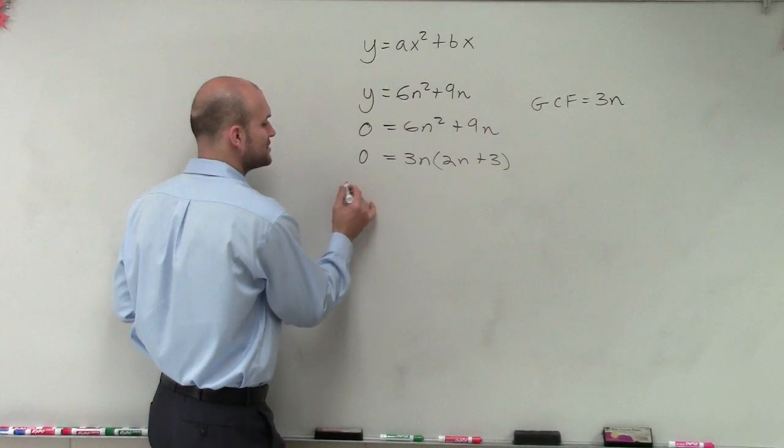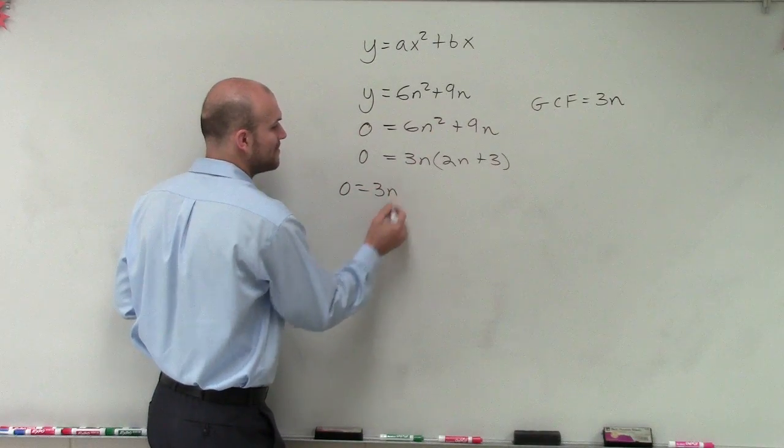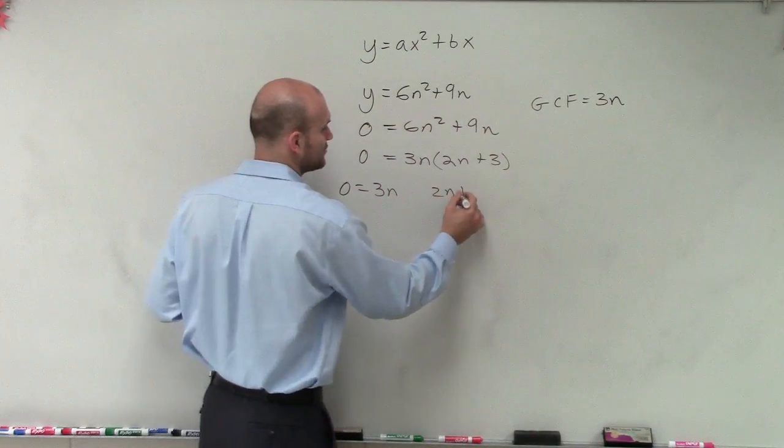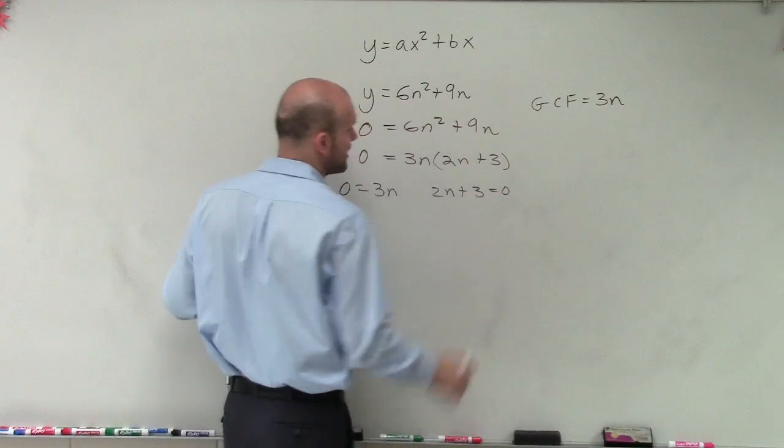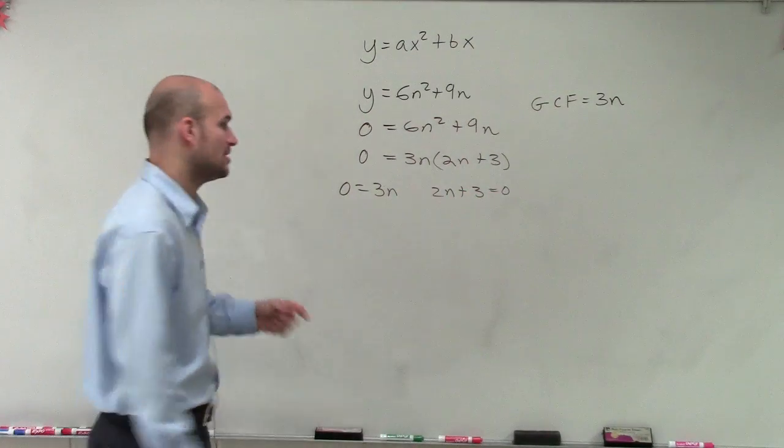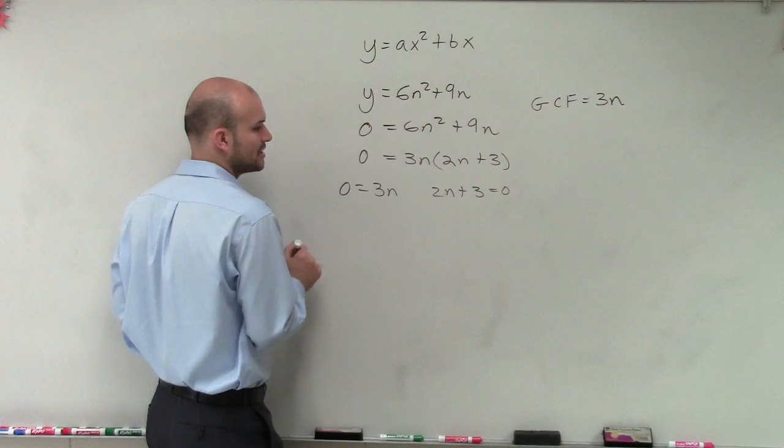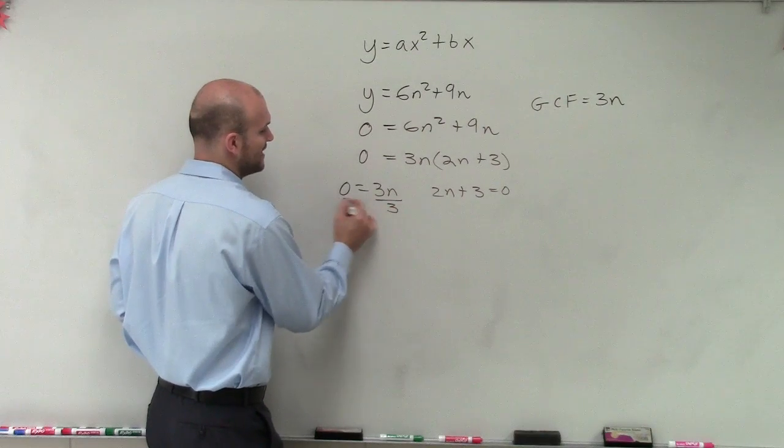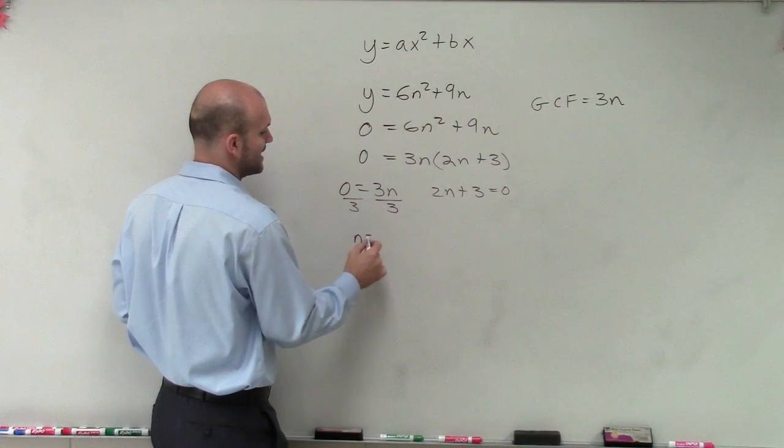And say that if I'm going to multiply those two factors to equal 0, then one of them or both of them has to equal 0. So therefore, we set them both equal to 0 and then solve. So by getting my n isolated, I get n equals 0.